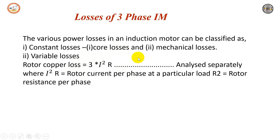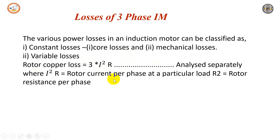Stator iron losses are combined with stator copper losses at a particular load to specify total stator losses at a particular condition. Rotor copper loss is given by 3·I₂²·R₂, where I₂ is the rotor current per phase and R₂ is the rotor resistance per phase, and it is analyzed separately.